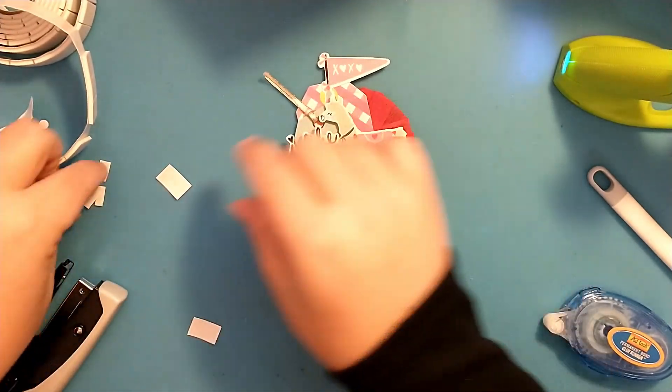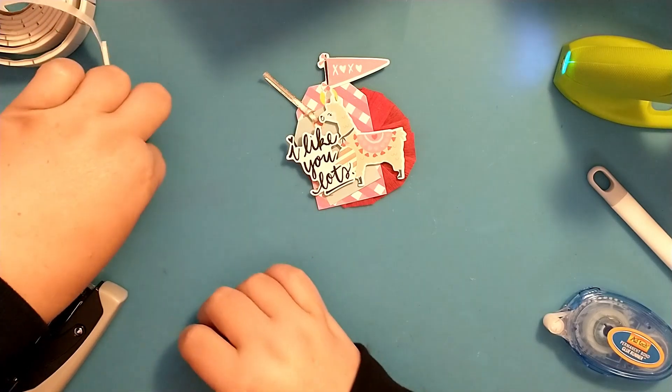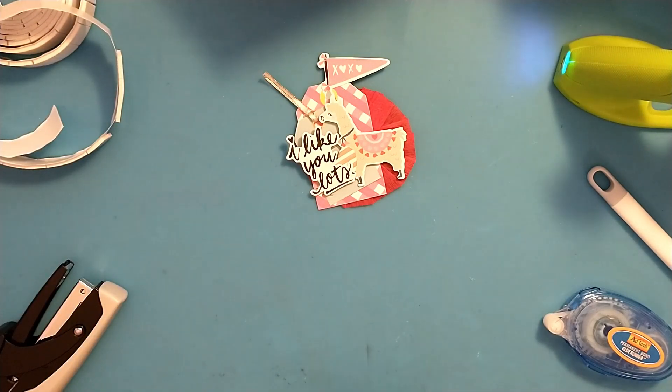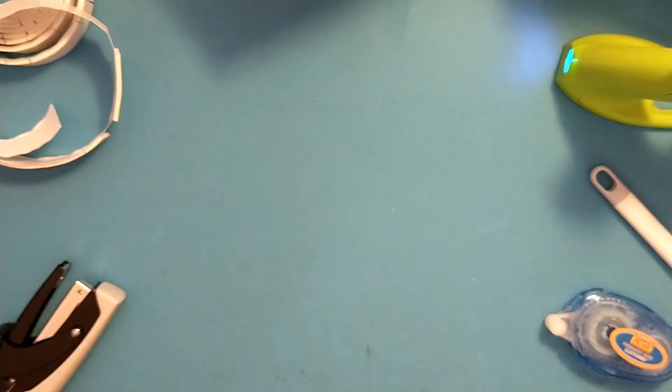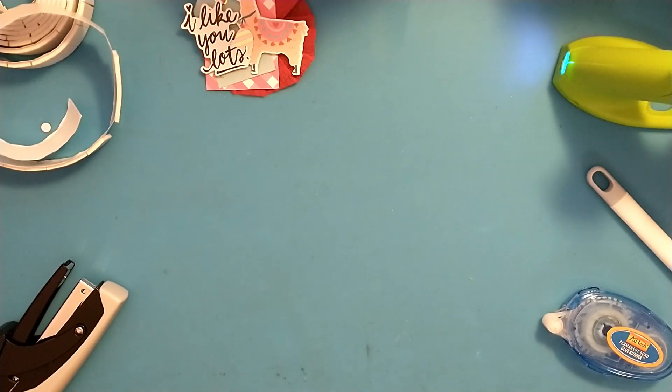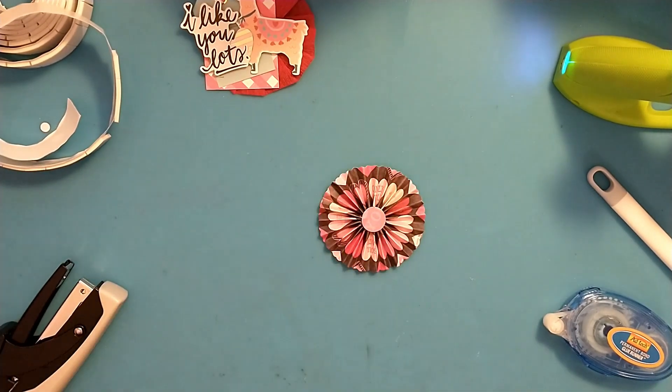And you see a little bit of the heart peeking out behind it, so that's cute. I feel like there's something missing up in this corner though, but let's go ahead and set this one aside and work on another one and then I can add some jimmies or bling or Nuvo drops or something to it.